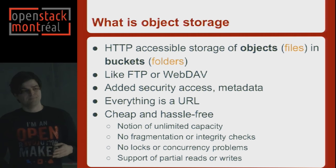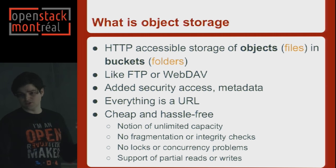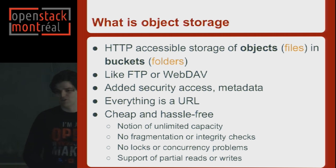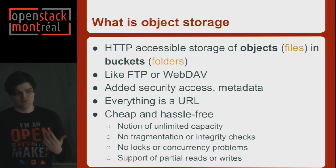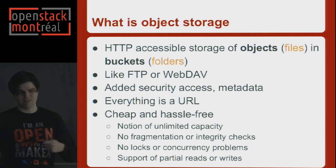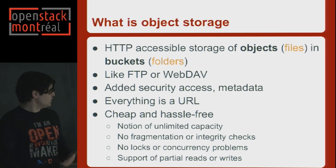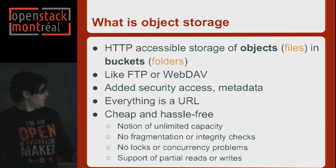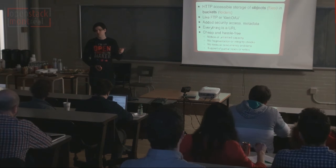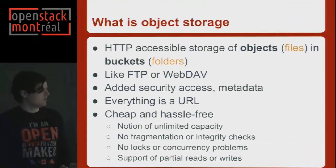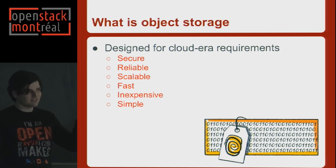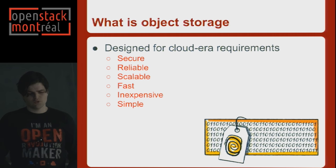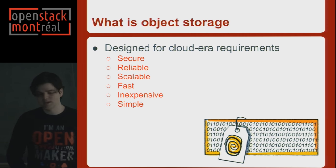The idea is to have added features like security access and metadata around objects, so developers can put their stuff there. Everything is a URL — by default you get a URL that looks like a folder slash file. You also get unlimited capacity, so as a developer you don't care how much space is left. There are no operational concerns: no fragmentation, no concurrency problems. Partial reads and writes are supported, so you can read from the middle of a huge file. It was designed for the cloud era — secure, reliable, scalable, fast, and simple.